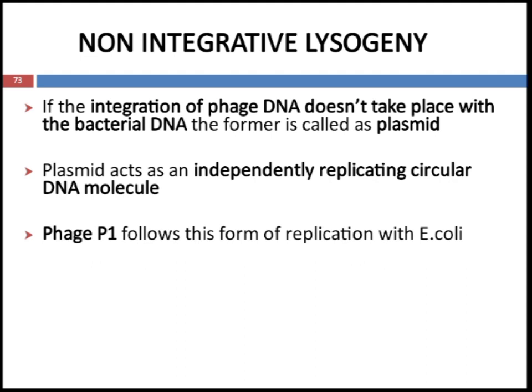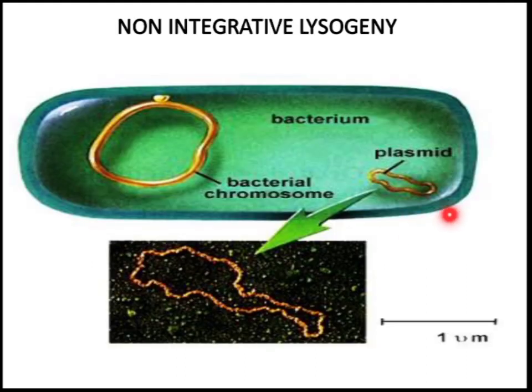There is another form of lysogeny called non-integrative lysogeny, in which integration of phage DNA does not take place. The bacterial DNA and the phage DNA that are not integrated are known as plasmids. Plasmids act as independently replicating circular DNA molecules. Phage P1 follows this form of replication with E. coli.